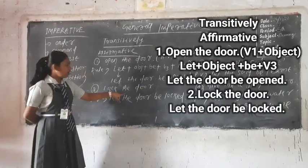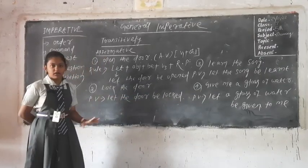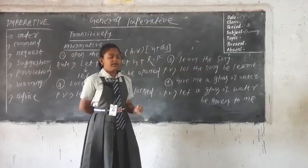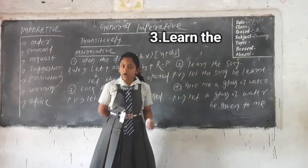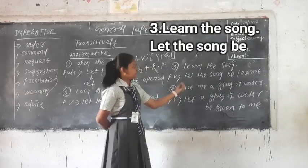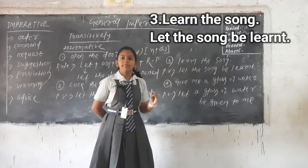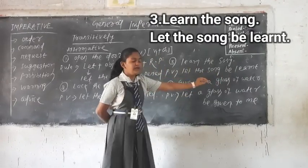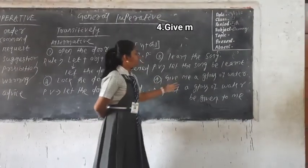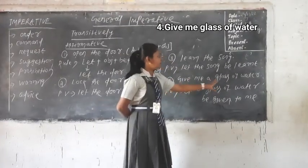Third sentence: 'learn the song'. Here, learn is the main verb and the song is the object. When we passivize this sentence, we write let first, then the object — the song — then be, and then the verb 3 form of learn, which is learnt. So 'let the song be learnt' is the passive voice of this sentence. Then the fourth sentence: 'give me a glass of water'. Here, give is the main verb and a glass of water is the object.